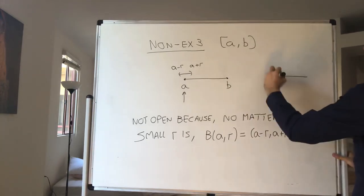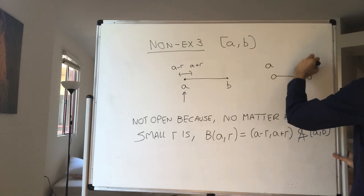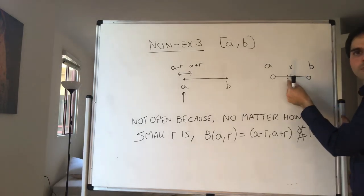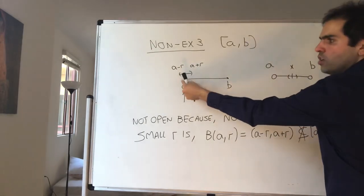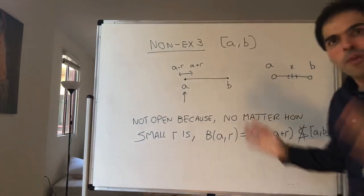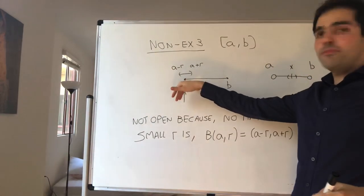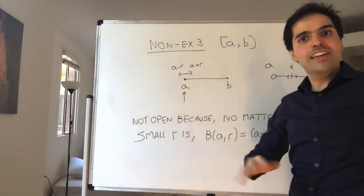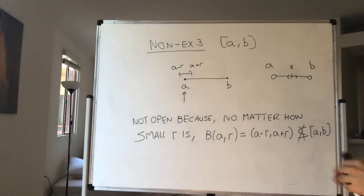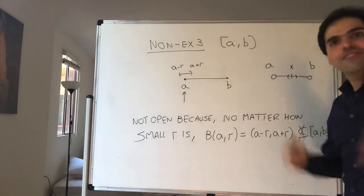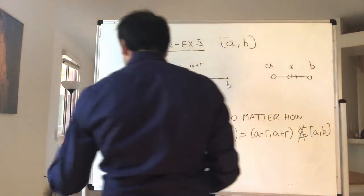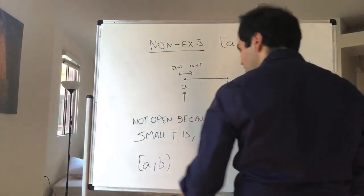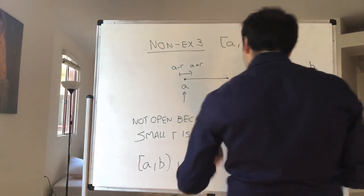That's very different from the open interval (a, b), because open means no matter where you are in that interval, you can always fit a very small ball inside it. But for [a, b], at the point a, there's no way of fitting a ball, even if the radius is absolutely tiny. Some say a is an edge or a cliff — if you go just a little bit less than a, you're not in the interval anymore. That's why we like open sets: we have wiggle room. Similarly, [a, b) and (a, b] are also not open.